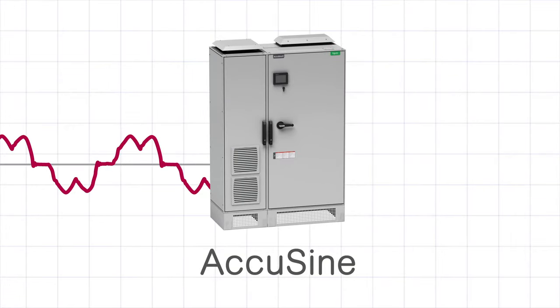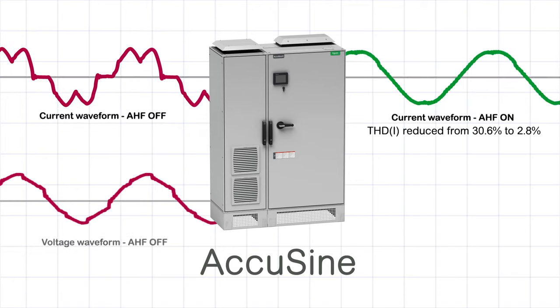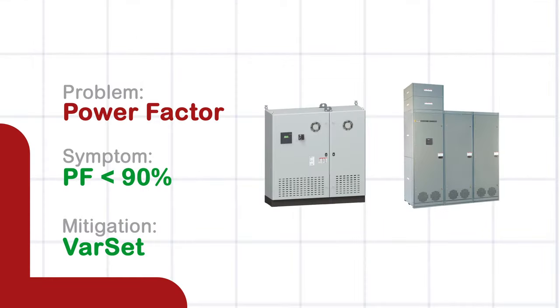AccuSign is ideal to remove the high frequency current from your distribution network, which in turn reduces the voltage distortion by stopping the flow of high frequency current through your electrical network impedance. The reduction of total harmonic distortion current and total harmonic distortion voltage removes the stress on your distribution network.